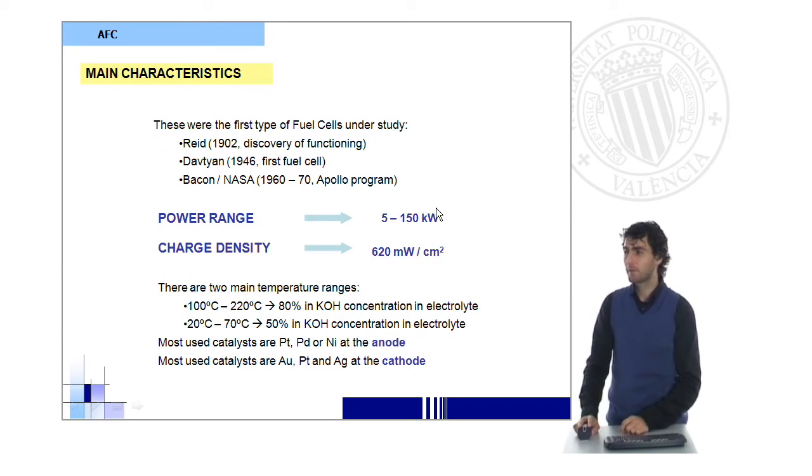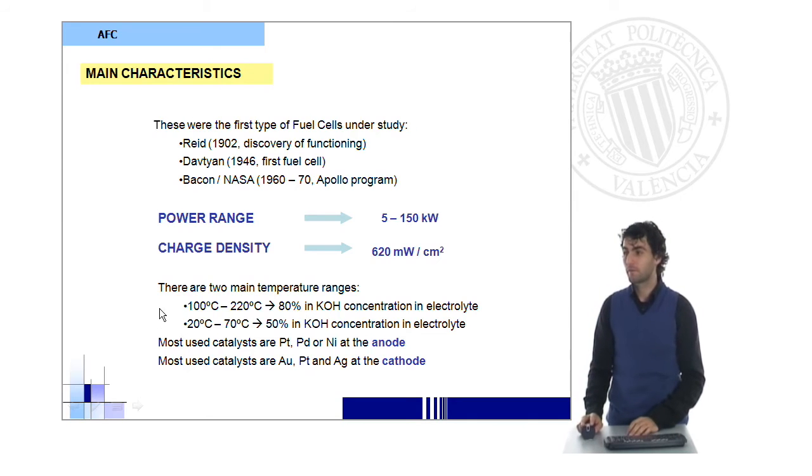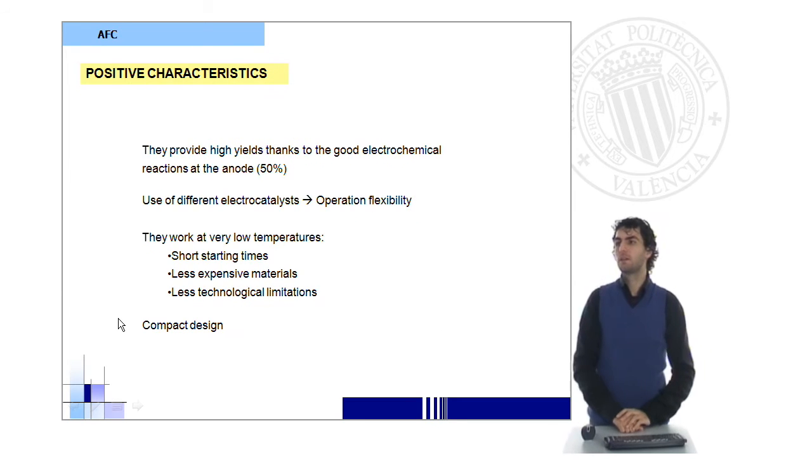These are the power range and charge density usually applied in this kind of system. These are very old fuel cells, the first to be applied in the spatial programs, NASA and the Apollo programs. The most used catalysts are platinum, palladium or nickel at the anode, and gold, platinum or silver catalysts at the cathode. These are the reasons why these fuel cells will be very expensive.